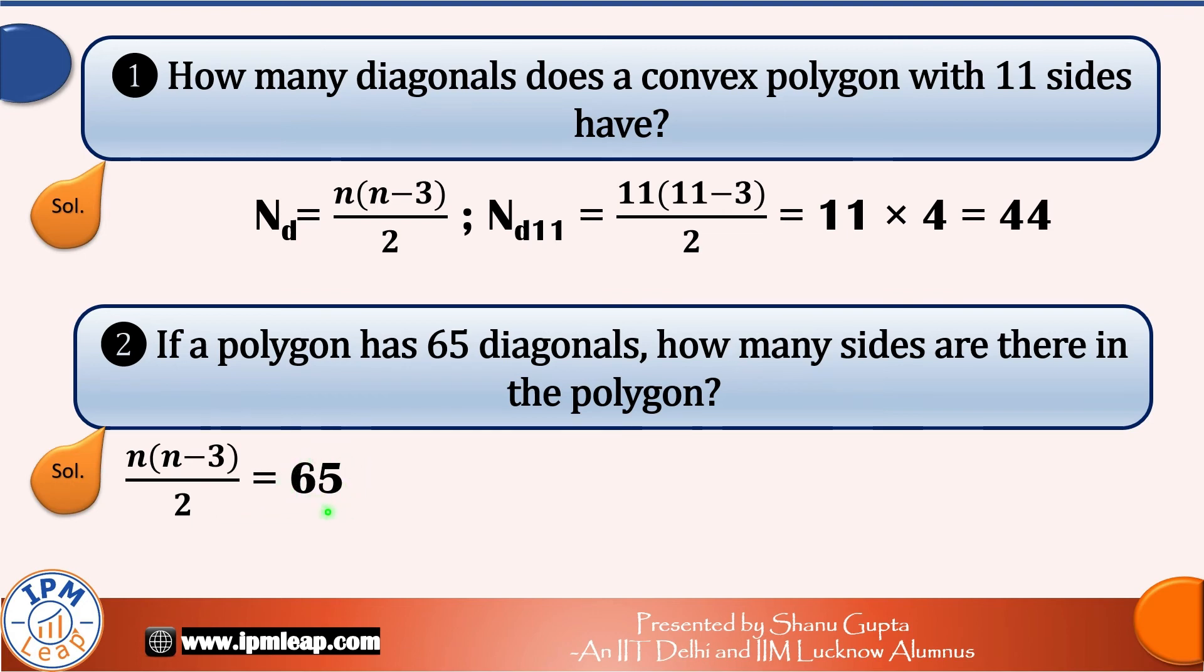So number of diagonals is equal to 65. Multiply this equation with 2 on both sides. We get n into n-3 is equal to 130. Now, even though this equation is a quadratic equation, we can solve it by trial and error. Because don't forget, n is a natural number.